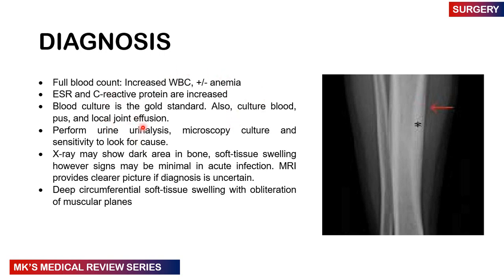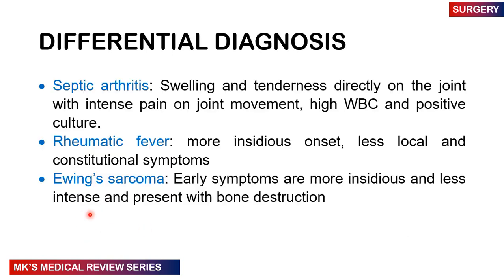On X-ray, you'll see a dark area in the bone and soft tissue swelling; however, there may be minimal signs in acute infection. MRI gives a much better picture than X-ray. Early features include periosteal elevation and soft tissue swelling — specifically, deep circumferential soft tissue swelling with obliteration of the muscular planes.